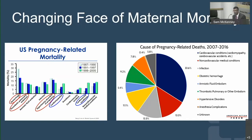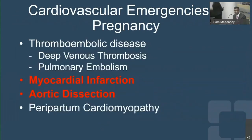A lot of this has to do with an aging obstetrical population with more comorbidities. When thinking about cardiovascular emergencies during pregnancy, thromboembolic disease is a big topic, but the two I'm going to focus on are myocardial infarction and aortic dissection.